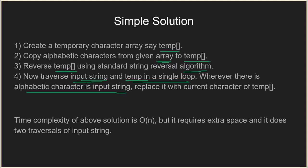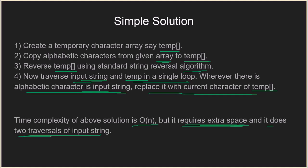Whenever we find an alphabetic character in the input string, we replace it with the current character of the temp array. For example, when we find the first character 'A' in the input string, we replace it with the first character in temp, say 'Z'. This effectively reverses the alphabets in the input string. The time complexity of this solution is O(n), which is the minimum possible. However, it requires extra space — that is one drawback — and it also does two traversals of the input string. These are the two areas where we can improve. The next algorithm solves this problem without using extra space and in one traversal instead of two.